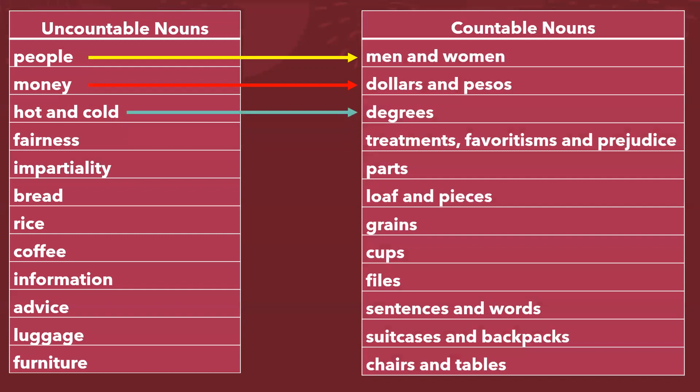Frío y calor: no podemos contarlo — mucho, poco, más o menos — pero podemos medirlo en grados. Y todos los demás. Recordemos en especial estos que menciono: fairness, impartiality. Recordemos que estamos hablando, en esta unidad que comienza, acerca de gender equity. Estamos trabajando interculturalidad y estamos trabajando equidad de género, así que vamos a utilizar estos conceptos.